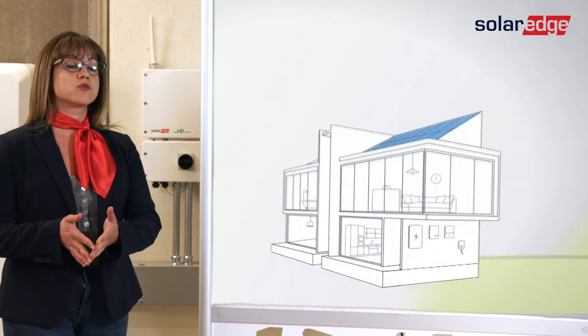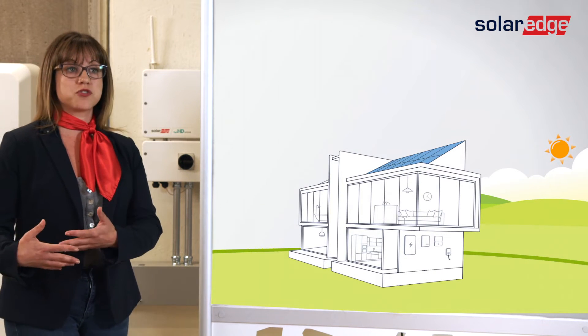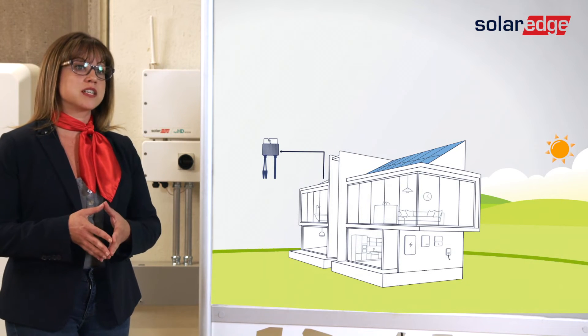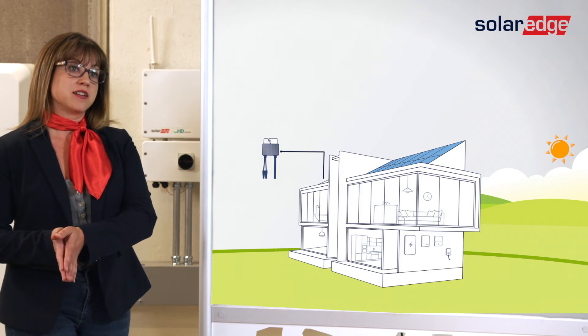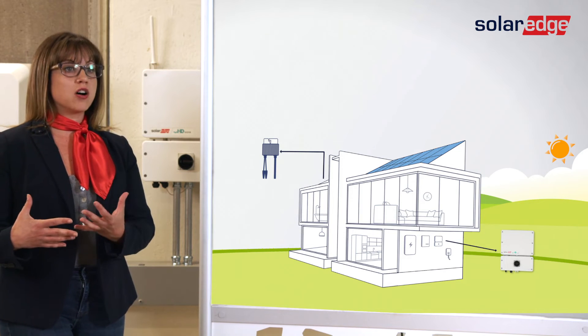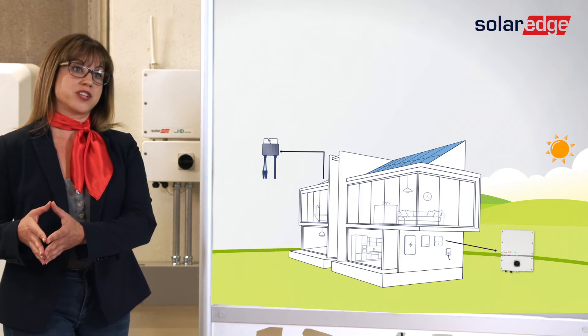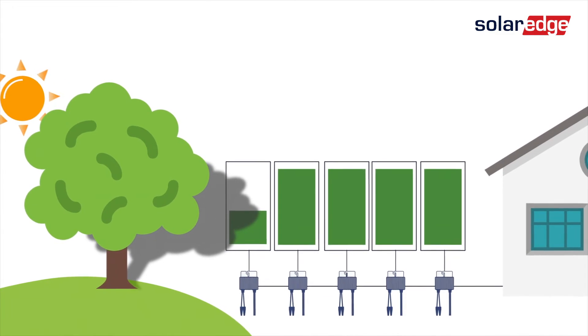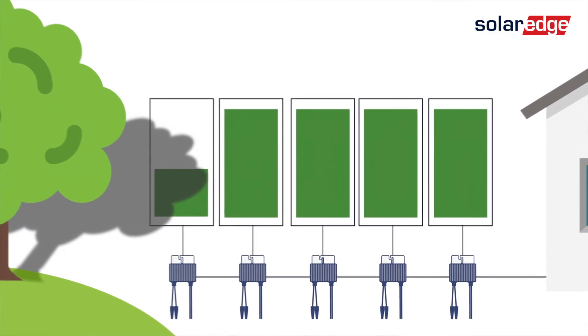Doesn't SolarEdge also have components on the roof? Yes, those are our power optimizers. SolarEdge is really the optimal solution for shading or obstruction concerns. It starts with our optimizers on the roof, ensuring that every single module is working both independently and collaboratively. Then we have the inverter on the wall, harvesting all of the energy from the roof at one central point of conversion. Optimizers ensure that the shading of one module doesn't impact the rest of the string, and they help an entire string produce at the level of its highest performing module — so even if a module is catching some shade, the rest of that string is working overtime to make up for it.